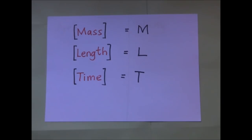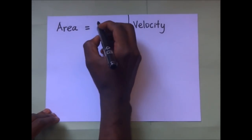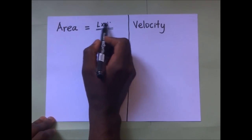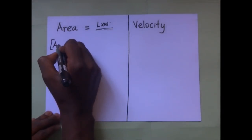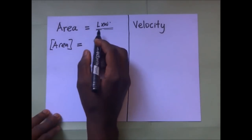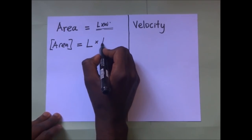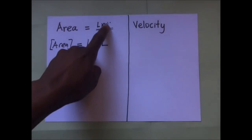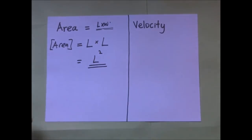We start with the dimensions of area. Area equals length times width. Width is also a length in terms of the three fundamental quantities, so the dimensions of area are L times L, which gives L squared. Those are the dimensions of area.